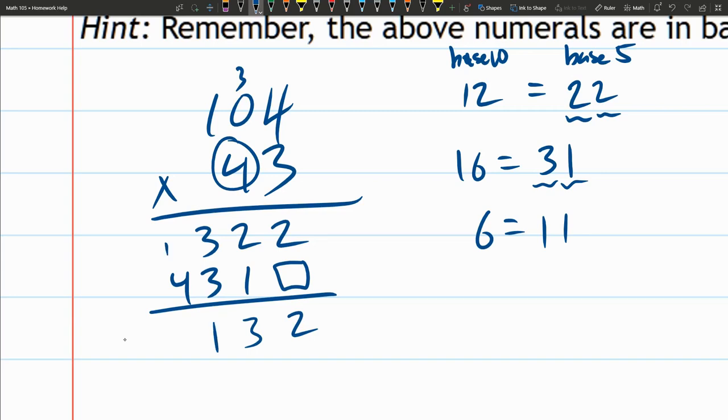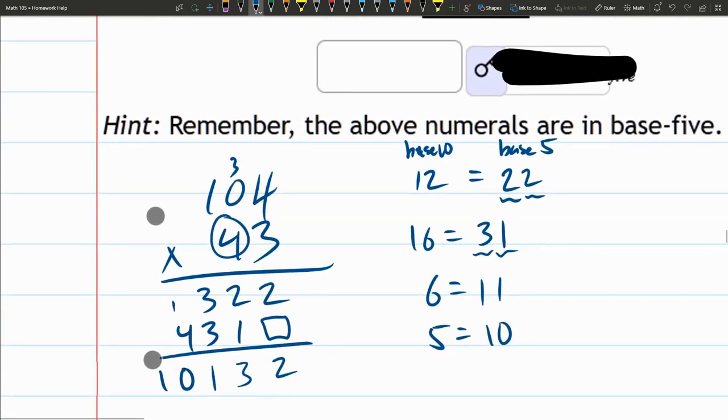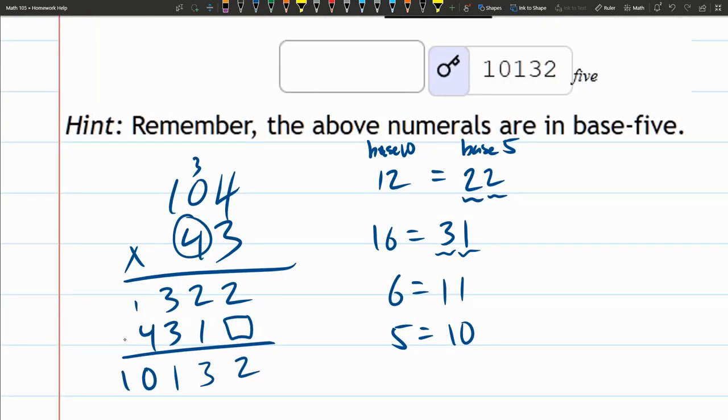So 3 plus 3 is 11 in base 5, carry the 1. 1 and 4 is 5, but remember in base 5 there's no 5, so 5 is written as 10. So we get a 10. So 10132 should be what we see here.